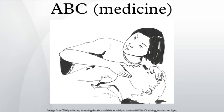In the unconscious patient, the priority is airway management, to avoid a preventable cause of hypoxia. Common problems with the airway of a patient with a seriously reduced level of consciousness involve blockage of the pharynx by the tongue, a foreign body, or vomit.